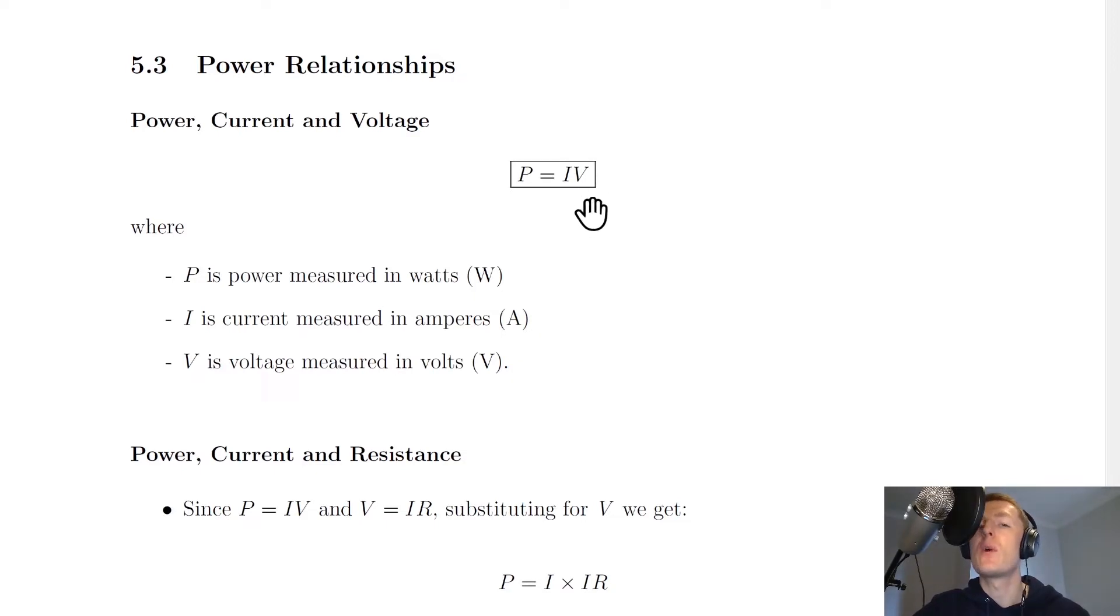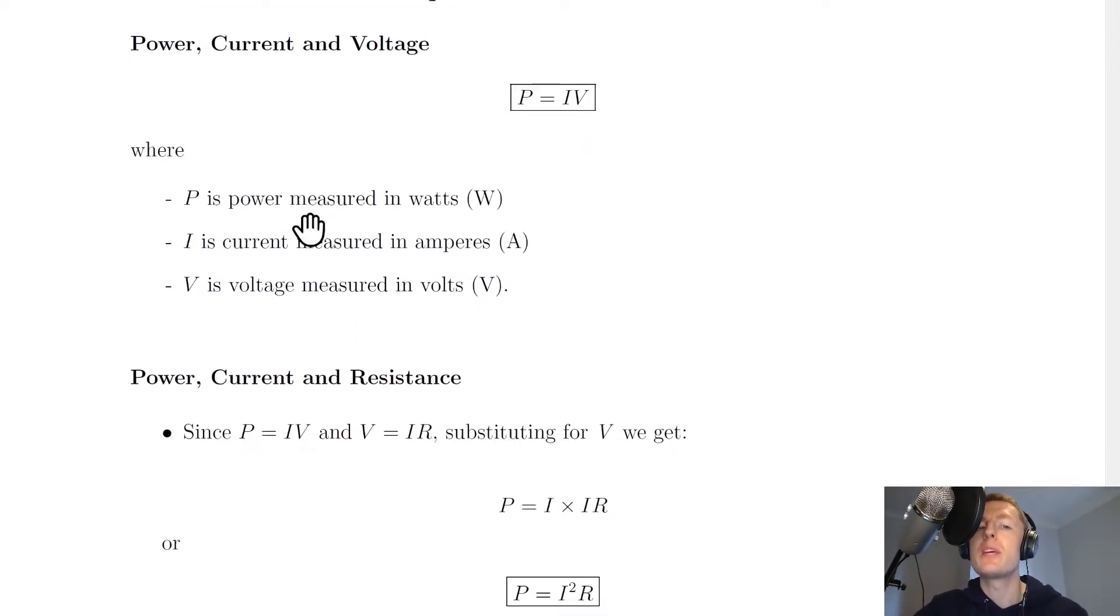You will get this equation on the relationship sheet in your exam. P is power measured in watts, I is current measured in amperes, and V is voltage measured in volts.